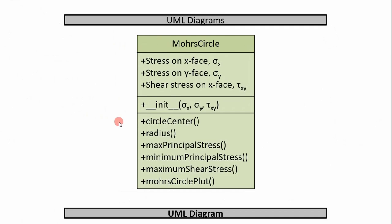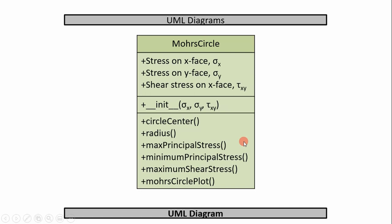Now that we know the equations, we can build our UML diagram. In the first box we have our parameters or inputs: sigma x, sigma y, and tau xy. We initialize these in a constructor. The functions we need are: calculate circle center, calculate the radius (hypotenuse of the triangle), and then determine max principal stress, minimum principal stress, maximum shear stress, and plot Mohr's Circle. Let's jump into Python and start writing this program.